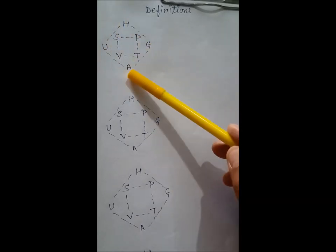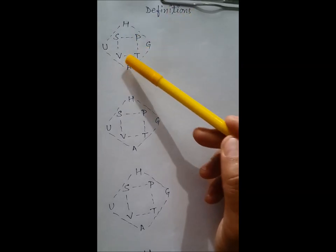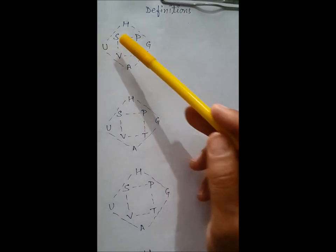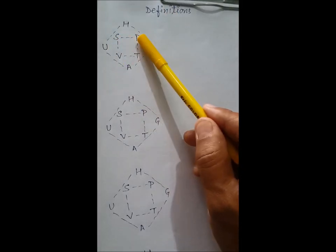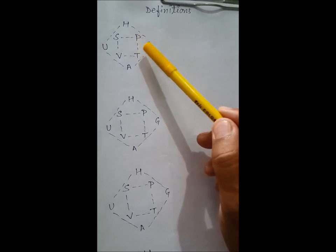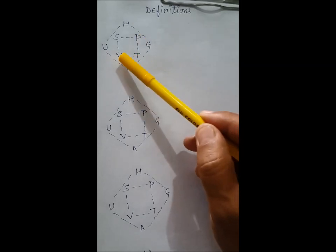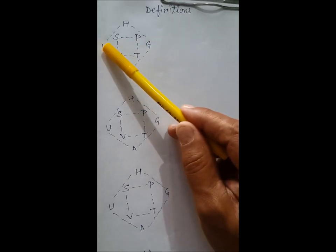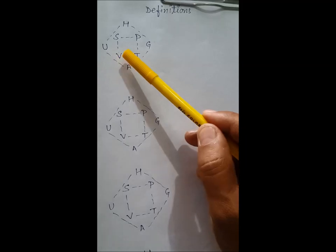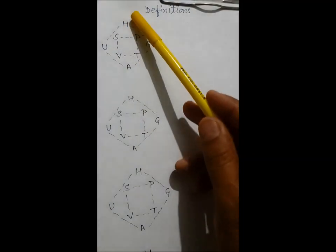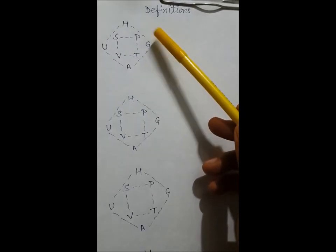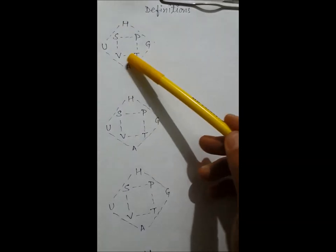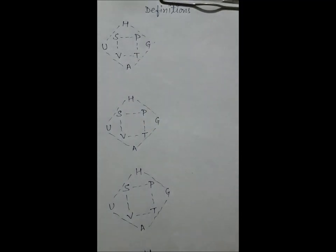Now one more square box is there. H is in between S and P, G is in between P and T, A is in between V and T, U is in between S and V. That means H is a natural function of S and P, G is a natural function of P and T, A is a natural function of V and T, and U is a natural function of S and V. H is enthalpy, G is Gibbs free energy, U is internal energy, and A is Helmholtz free energy.